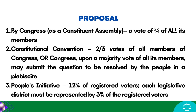The third mode is through people's initiative. People's initiative on the Constitution is done through a petition that must be signed by at least 12% of the total number of registered voters, provided that in each legislative district, at least 3% of the registered voters therein shall sign the petition. People's initiative on the Constitution is limited only to proposing amendments, not revision thereof.